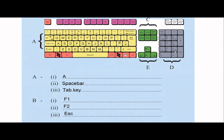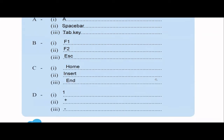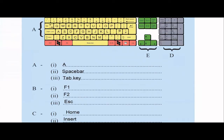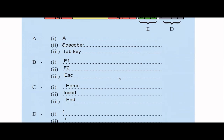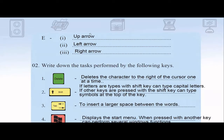Category D is for the number pad, which includes Num Lock. If you click Num Lock you can type numbers; click it again and the number pad will be locked and won't work. If the number pad isn't typing, press Num Lock to enable it again. The number pad includes division, subtraction, addition, multiplication, Enter, and Delete keys. Category E is for the arrow keys: up, left, right, and down arrows.